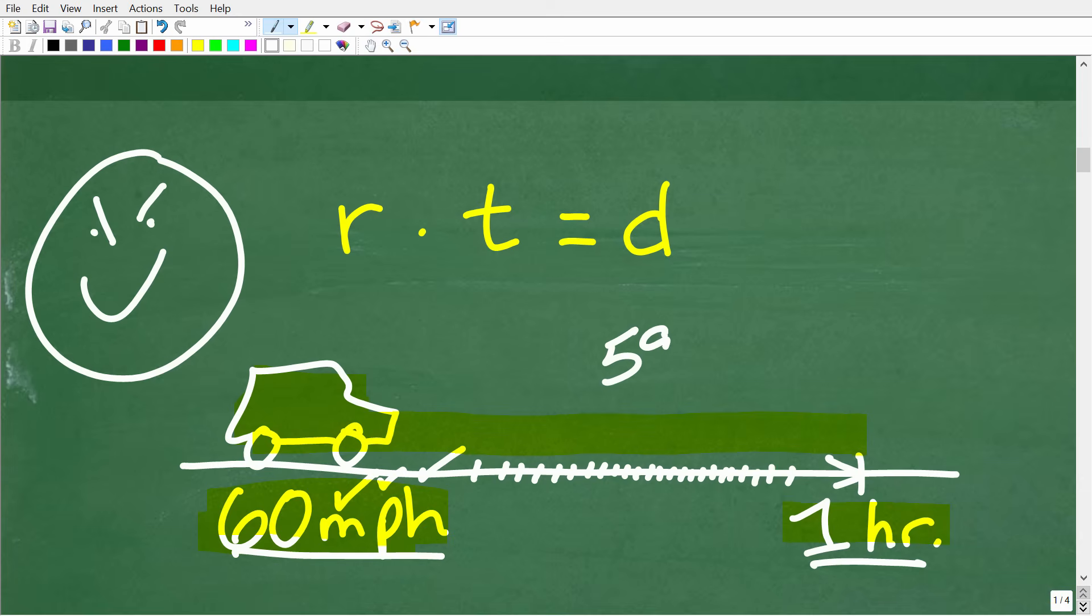It might be like 59.9 miles per hour or 60.1 miles per hour. So in real life, there would be fluctuations. But what we could say is that this car's average speed, or average rate, was 60 miles per hour. And this is an important distinction.